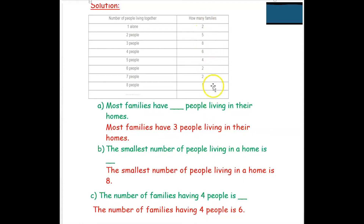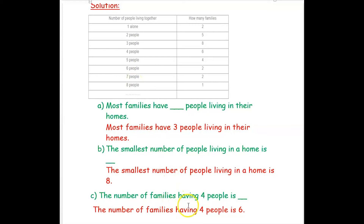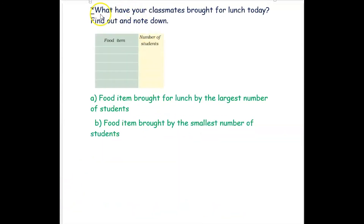Next question: the smallest number of people living in a home is? The smallest number in the families column is one, and against that one the number of people is eight. So the smallest number of people living in a home is eight. For the third question — number of families having four people — we look at four people and find the families: six. So six families have four people in their home.